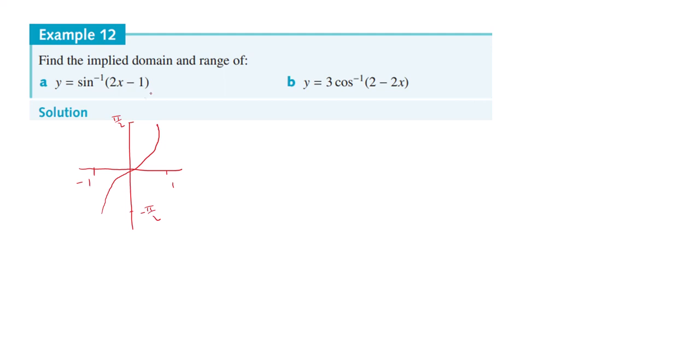What we know is that if you're doing sin⁻¹, the bracket has to be between -1 and 1. In other words, 2x - 1 is greater than or equal to -1 and less than or equal to positive 1.